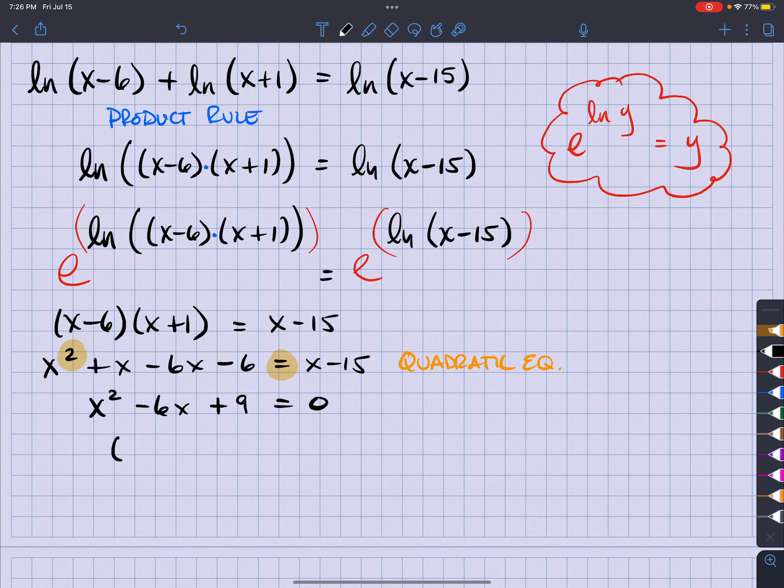So I'm going to have what? (x-3) times (x-3) is equal to zero. So I have x is equal to 3.